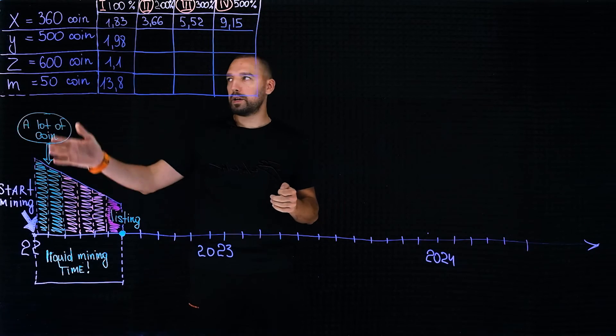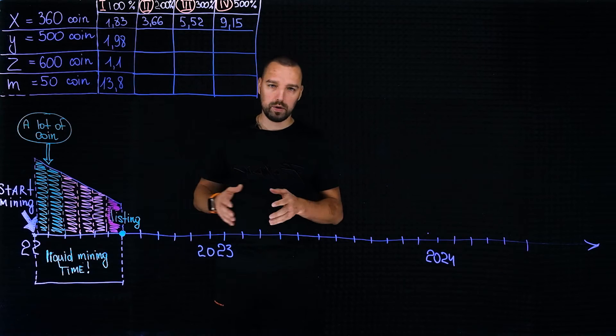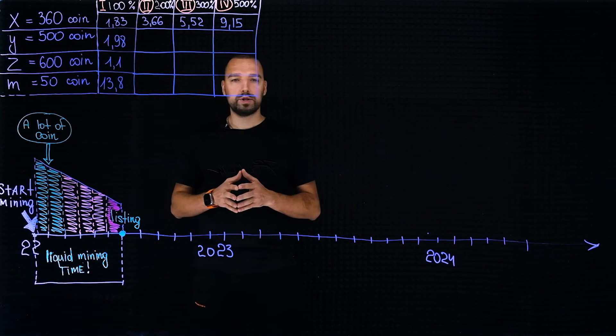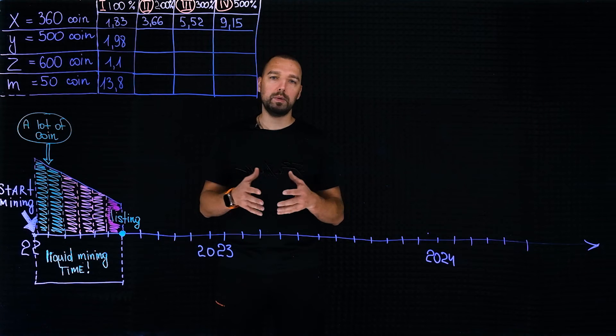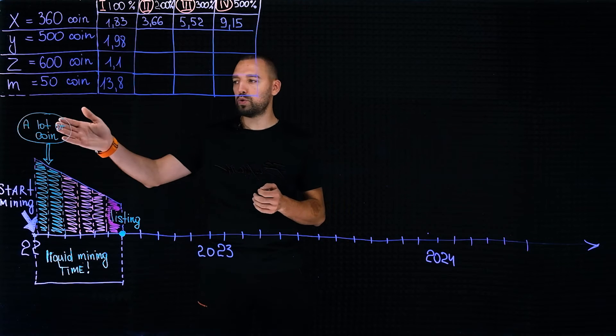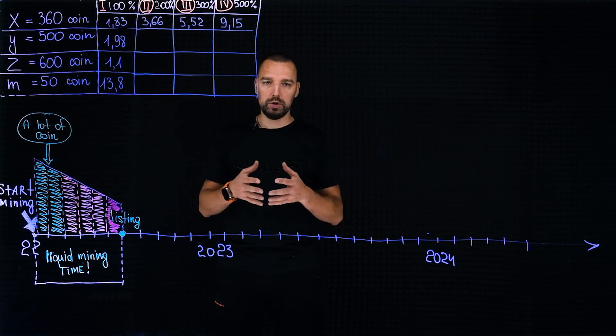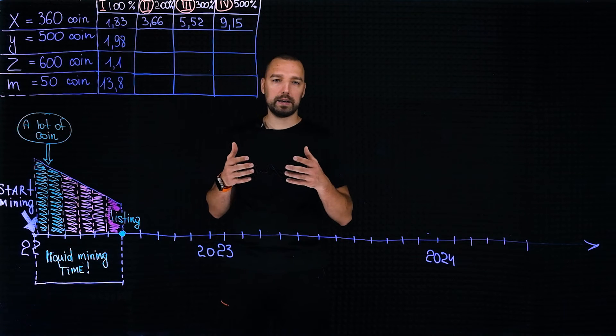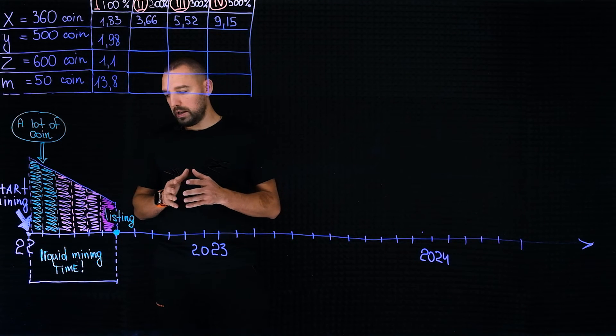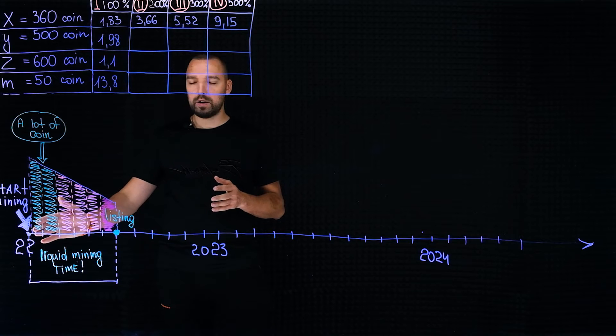The start of the mining of the X project began at the beginning of the 22nd year. As soon as mining has started, as in any project, there is the minimum number of miners, which means that the level of monetization during mining is the maximum. Accordingly, the goal of the liquid project is to enable miners to connect precisely in the first months of the project's mining start.